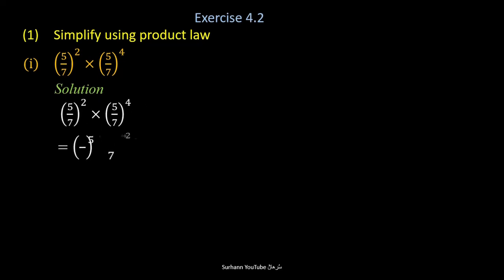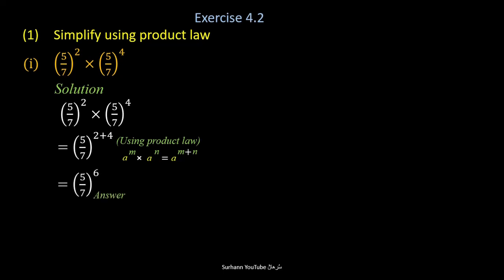Here you note that the base value 5 upon 7 is the same, so we will just add their power values only — meaning 2 plus 4 — because the product law says that when the base of any two values is the same, we add their power values and the base remains common. Now simplify it and get the answer.